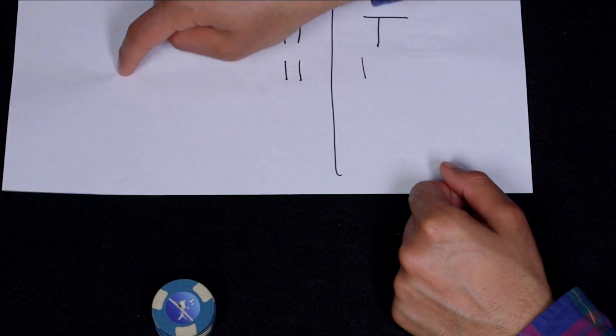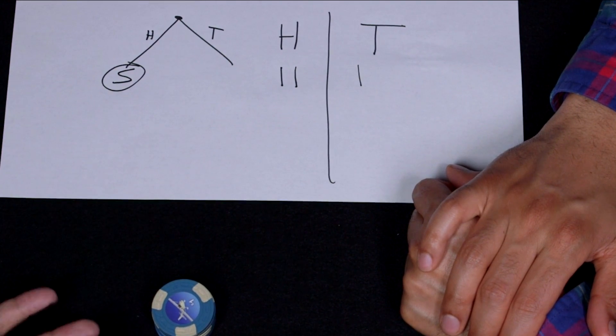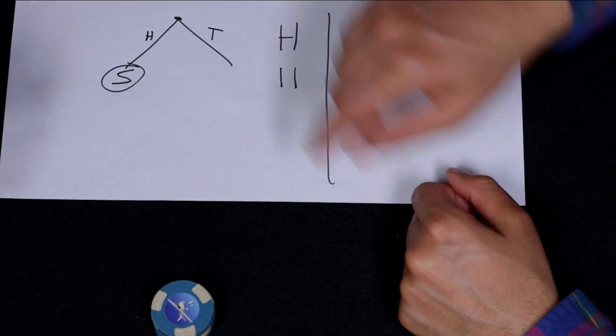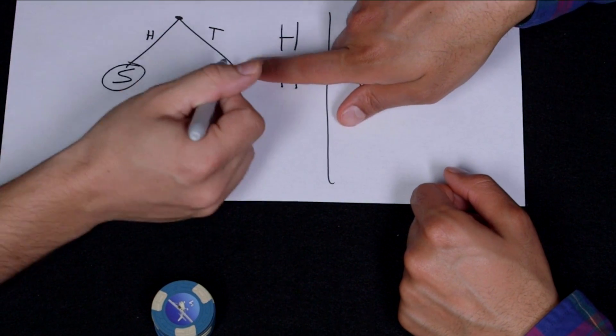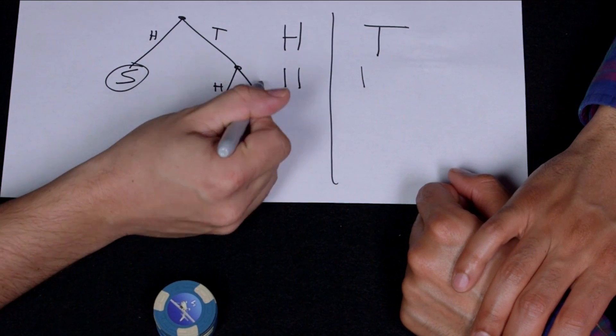Right. If it's heads, Sal wins. If it's heads, Sal wins. And I get eight. And you get the whole pot. But if it's tails. If it's tails, then we keep playing. So I need to do another branch. Oh, I like this. So it's either going to be heads or tails.